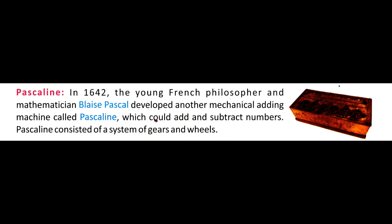In 1642, the young French philosopher and mathematician Blaise Pascal developed a mechanical adding machine called the Pascaline, which could add and subtract numbers. The Pascaline consisted of a system of gears and wheels.